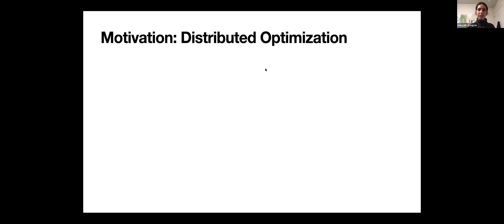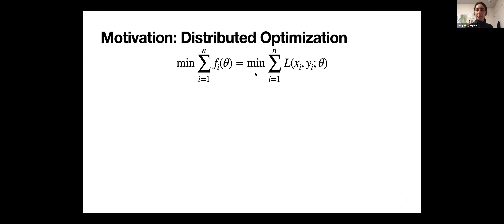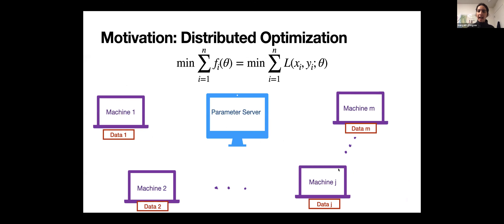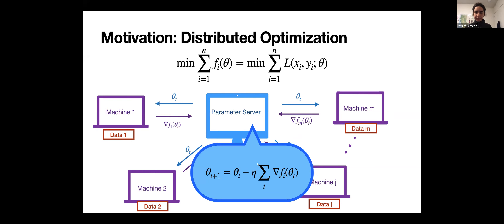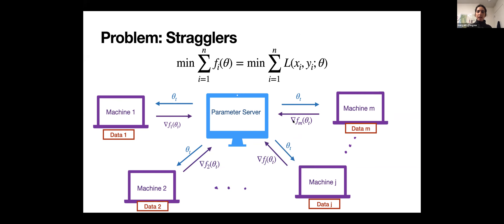The motivation will be pretty familiar. In many machine learning applications we're trying to minimize a sum of functions, where these functions represent individual loss functions. We're in a distributed setting with many machines, each holding individual data used to construct a loss function fi. All individual machines communicate with a single parameter server — this comes up in data centers or federated learning. One way to solve this optimization problem is via distributed gradient descent: the parameter server communicates the current iterate θ_t to all machines, they compute gradients and send them back, and the parameter server aggregates all gradients and takes a gradient descent step.